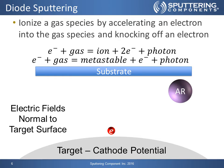In the diode sputtering process discovered by Grove, we ionize a gas species by accelerating an electron into the gas species and knocking off another electron. In the first equation we can see: electron + gas molecule = ion + two electrons + a photon. We can also have another reaction where we take an electron and a gas molecule to create a metastable, an electron, and another photon. The photons create the visible part of the plasma that you can see, while the argon does the bulk of the sputtering.